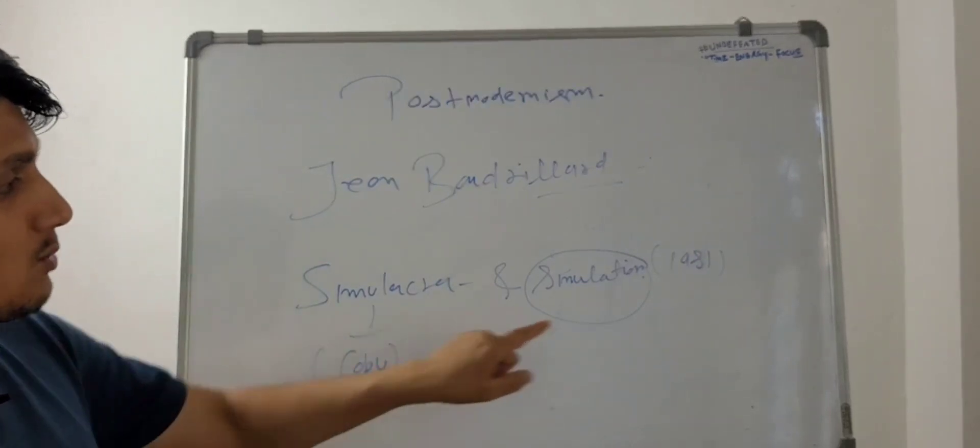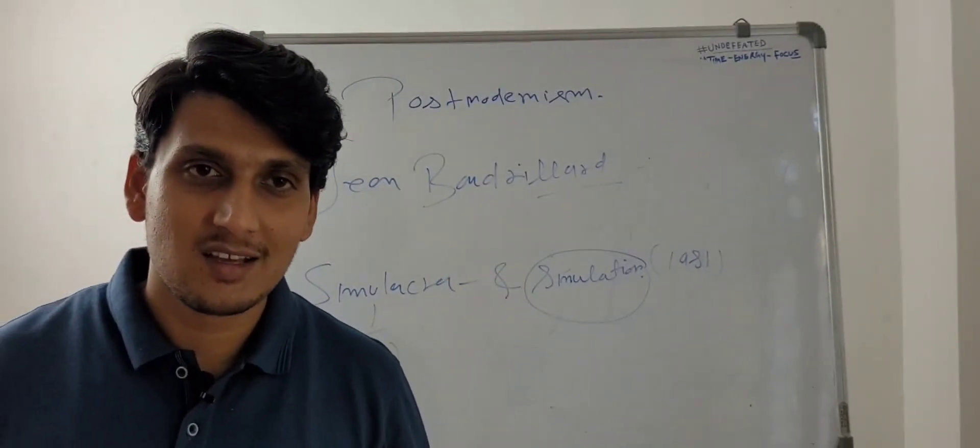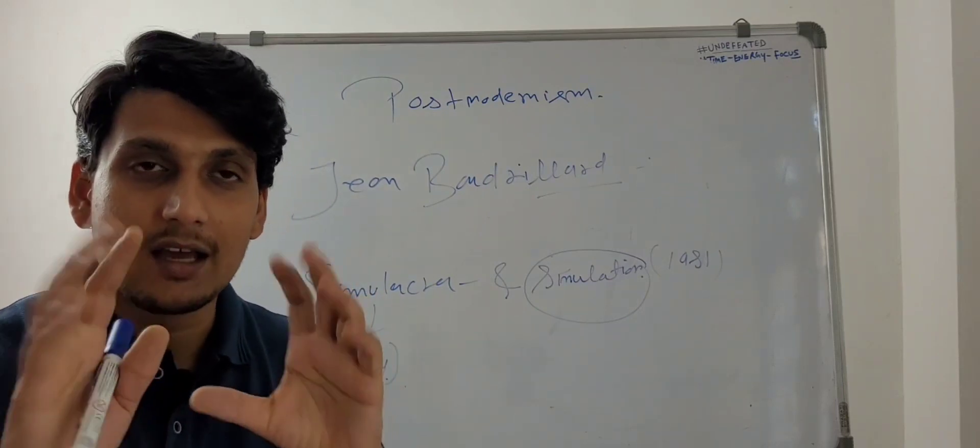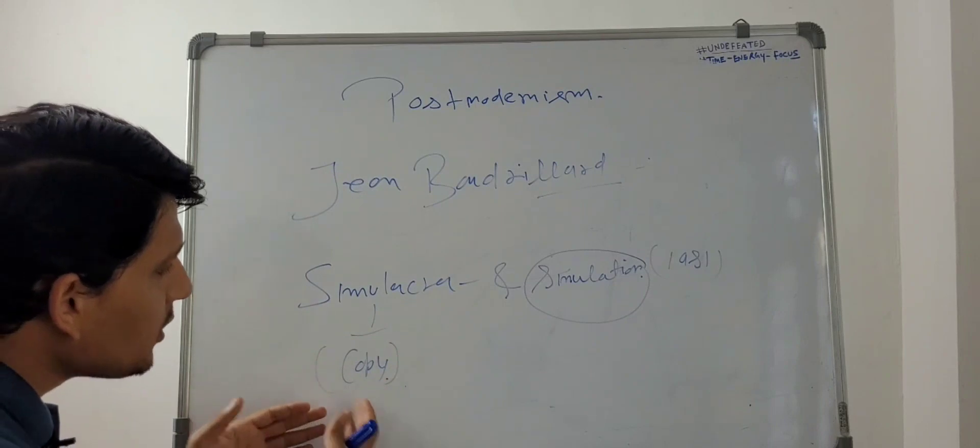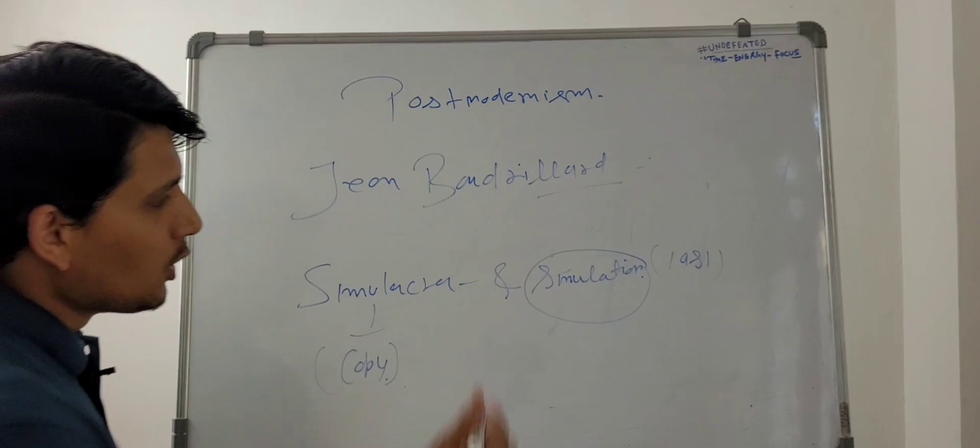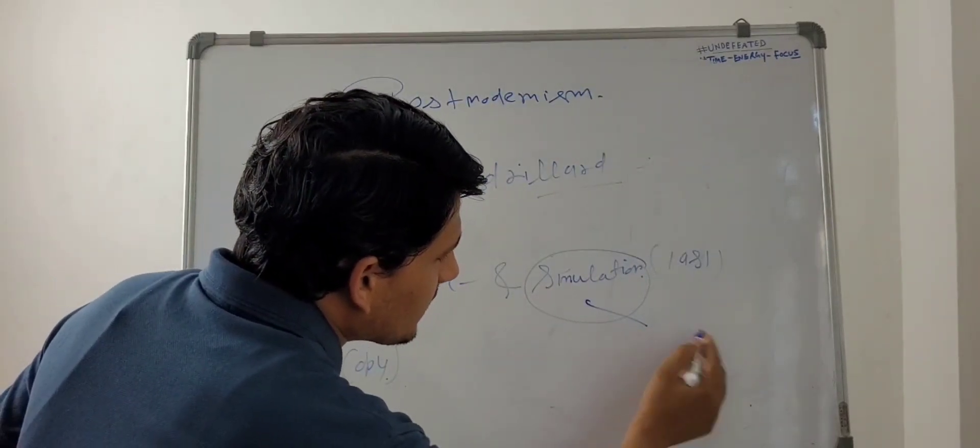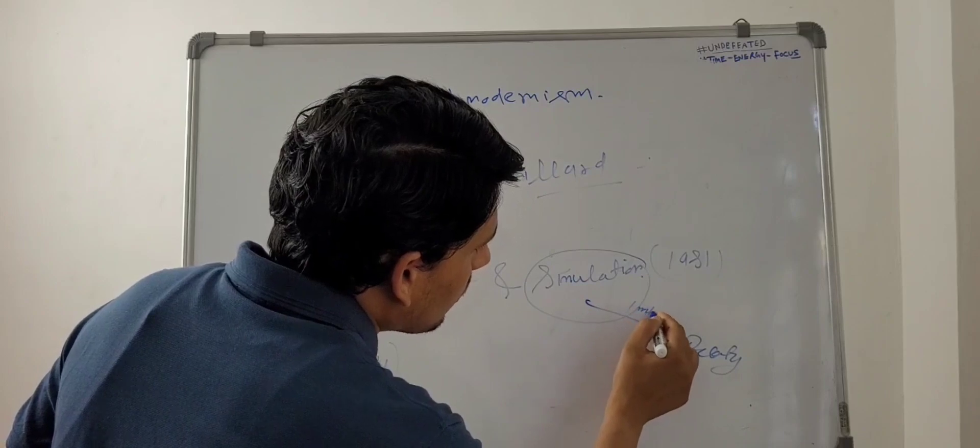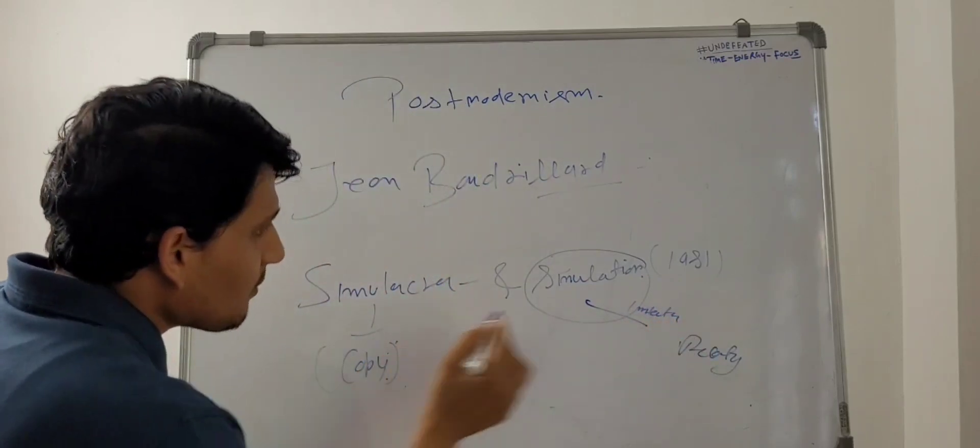That is simulacra. And what is simulation? It is the process in which your photo is taken - that's reality. But you've accepted the copy as reality. That is simulacra. So what is simulation? It imitates reality, it imitates what? Reality.